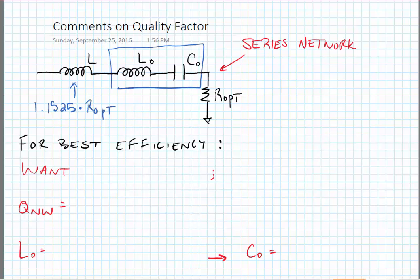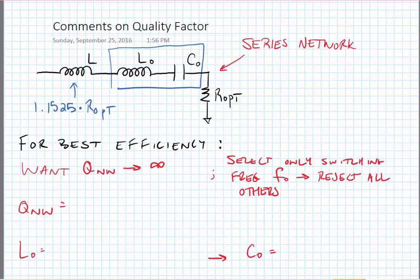Now we note for best efficiency, we typically want the quality factor of the network to be as high as possible. In other words, we would want Q_network to be headed towards infinity. If the network quality factor were infinity, we would select only the switching frequency to be delivered to the load R_aught, and we would reject all of the other frequencies.